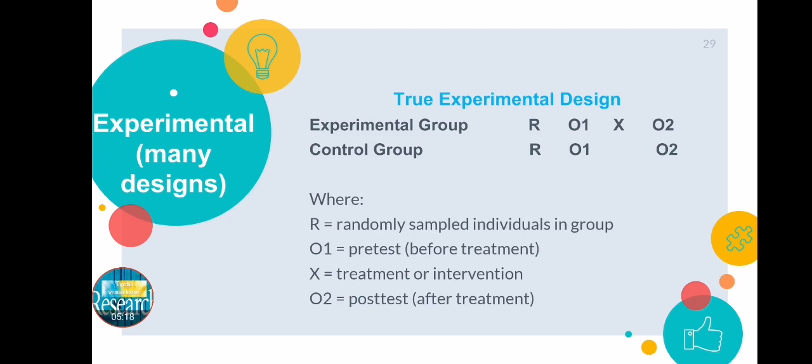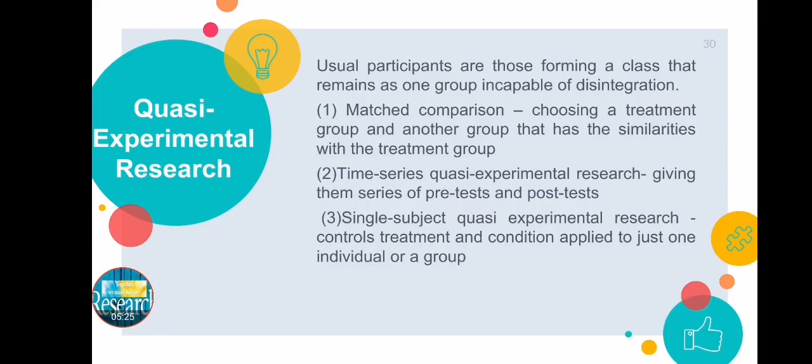In quasi-experimental research, participants are usually those forming a class that remains as one group. There are three types: one is matched comparison, two is time series quasi-experimental research, and three is single subject quasi-experimental research.